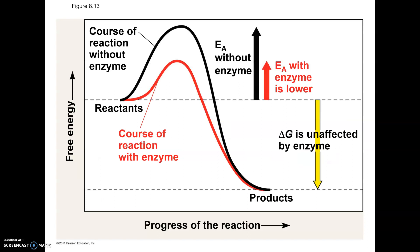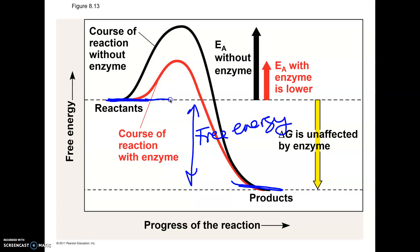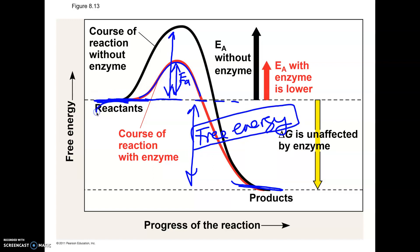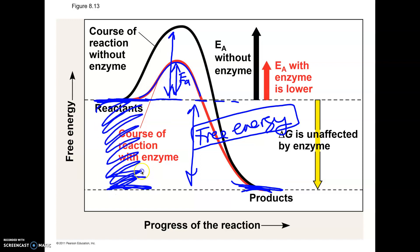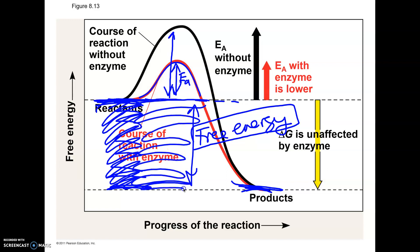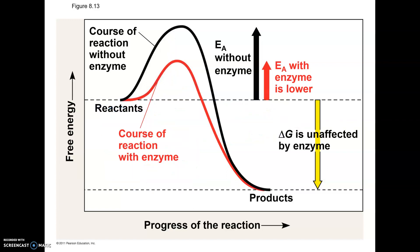This is the graph you should know — it will definitely be on your test. This shows free energy. Notice the free energy change does not change whether you have an enzyme or not. All the enzyme does is lower the activation energy. With a lower activation energy, you don't need as big a kickstart to get the reaction going, so it goes faster. But the free energy — the difference between reactants and products — doesn't change. It's like driving versus walking to school: you get there faster driving, but the distance doesn't change. The free energy change is unchanged by an enzyme; what changes is the activation energy.